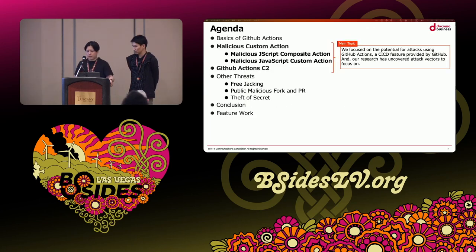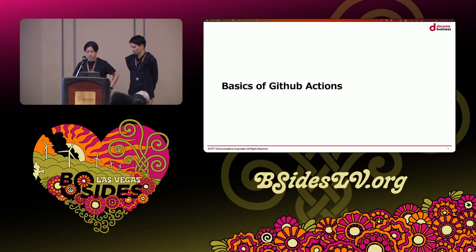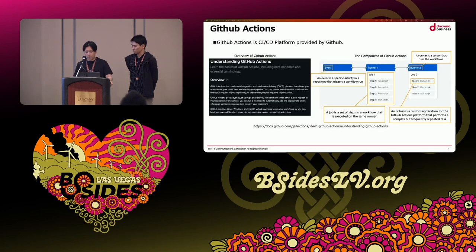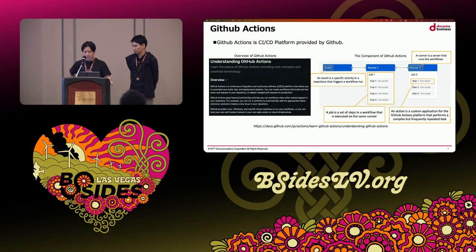This is our presentation agenda. First, we talk about the basics of GitHub Actions. GitHub Actions is a CI/CD platform provided by GitHub that allows us to automate build, test, and deployment pipelines. This is a component overview of GitHub Actions.